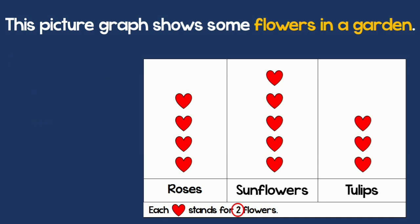Now I want to know how many tulips are there. I have 3. Remember the key. 3 times 2 is 6.